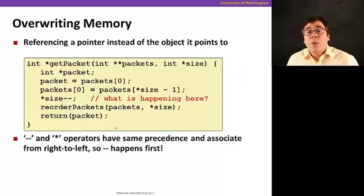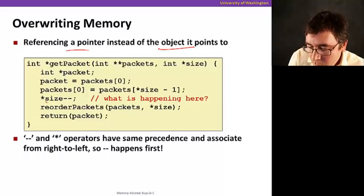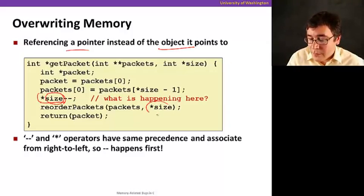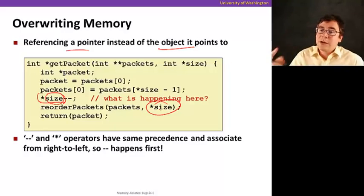Here's another one. When you reference a pointer, you want to make sure that you're actually referencing what you expect. So if you reference a pointer as opposed to the object of the pointer, that could be a problem. So here's an example. When I call, when I execute star size minus minus here, I'm not decrementing the value of size, which is clearly what's intended in this code. I'm decrementing the pointer first.